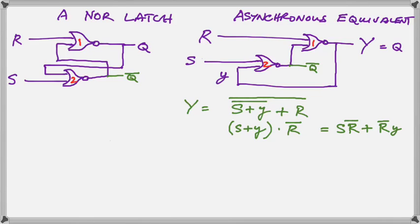So here we've drawn our latch with our asynchronous circuit, and we've worked out what the Y is going to be in terms of the S, the R, and the little y. If you have trouble following that, or some steps are missing, you can go back and watch my video on De Morgan's theorem.